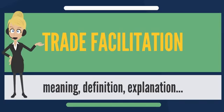Trade facilitation looks at how procedures and controls governing the movement of goods across national borders can be improved to reduce associated cost burdens and maximize efficiency while safeguarding legitimate regulatory objectives. Business costs may be a direct function of collecting information and submitting declarations, or an indirect consequence of border checks in the form of delays and associated time penalties, foregone business opportunities, and reduced competitiveness.